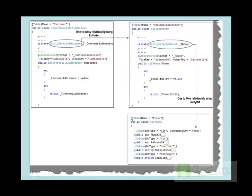LINQ uses EntitySet and EntityRef to define one-to-many and one-to-one relationships in LINQ classes. In our ER diagram, customer and addresses have a one-to-many relationship. So what we do is create an object of CLS Address inside the customer class using an EntitySet collection, and then define our set and get property.